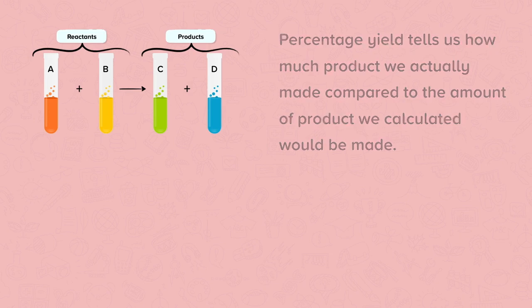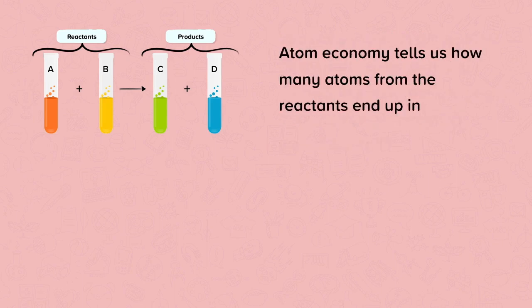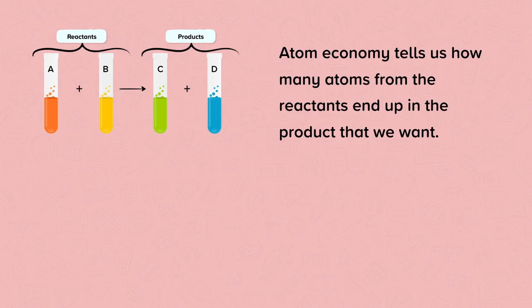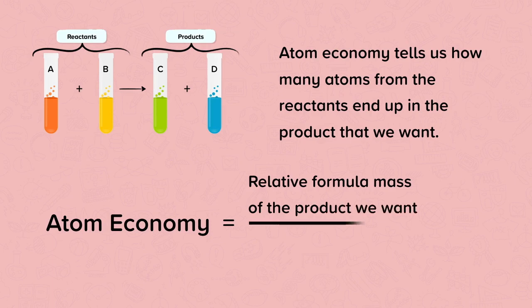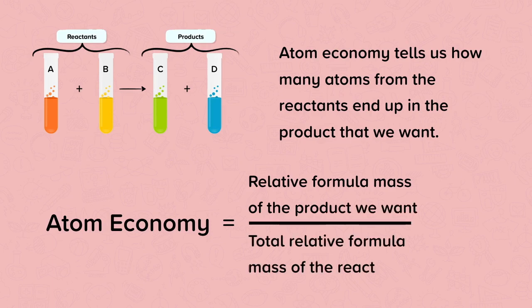The atom economy tells us how many atoms from the reactants end up in the product that we want. We can calculate it by working out the relative formula mass of the product that we want, divide it by the total relative formula mass of the reactants, and then multiply it by 100. This will give a percentage.